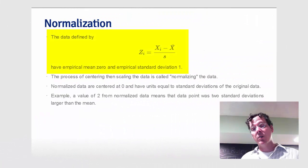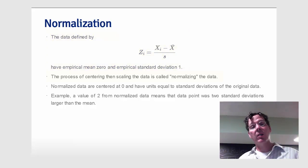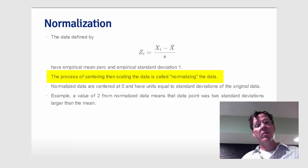If we take our original data now and subtract off x̄, then take the resulting centered data and scale it by s, we get a new data set, let's call them zᵢ, and these have empirical mean zero and empirical standard deviation 1. This process of centering and then scaling is called normalizing the data.